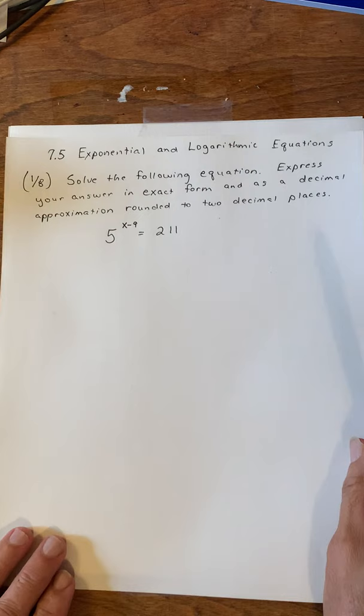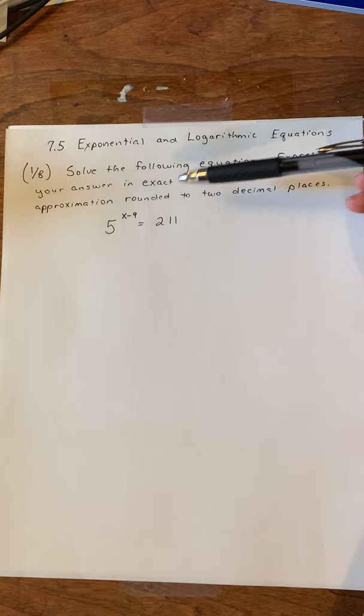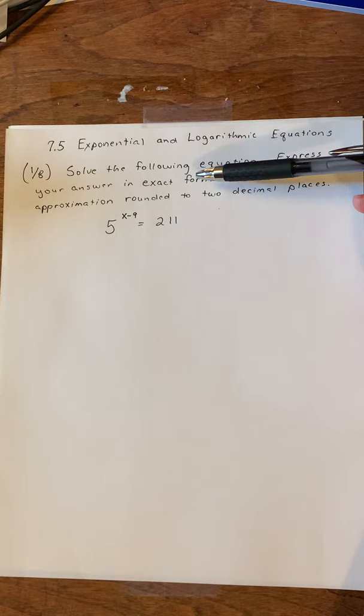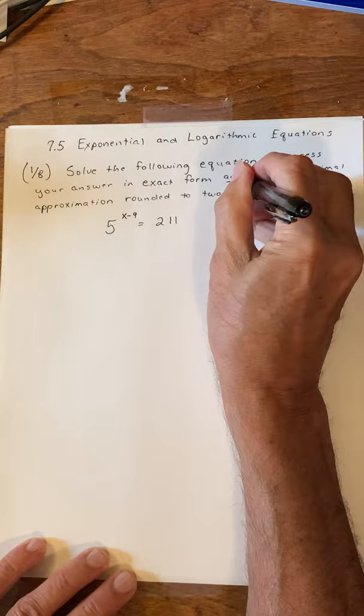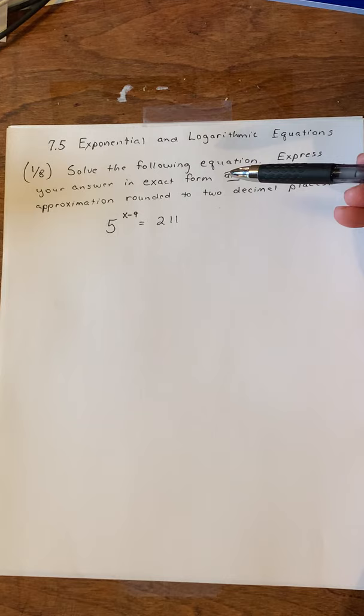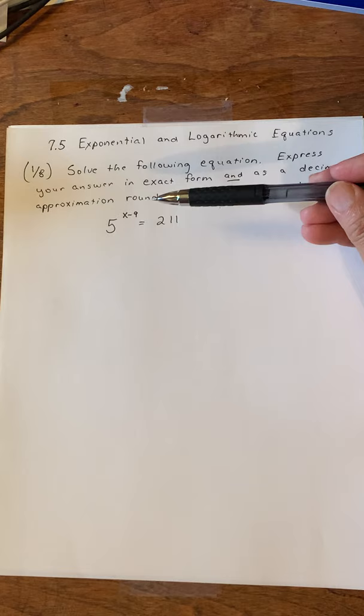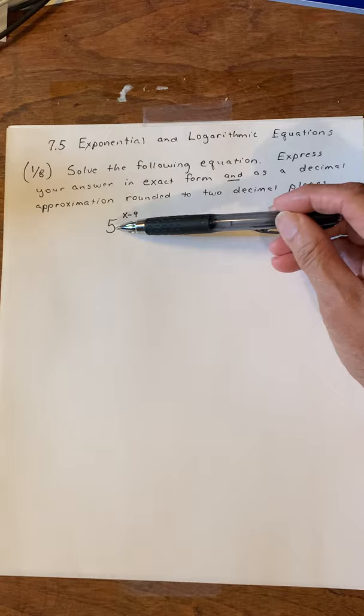Alright, here we go. Let's start with this one. It says: solve the following equation. Express your answer in exact form — exact form, by the way, is going to involve square roots, logarithms, something that hasn't been figured — and as a decimal approximation rounded to two decimal places. Notice what you've got here: an exponential expression, very simple. Something to a power equals something.